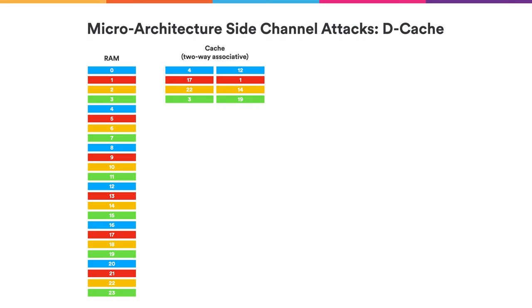To understand Spectre attacks a little bit better, let's have a look at RAM and cache organization of our computer systems. From the cache perspective, we can think of RAM as organized in distinct blocks where each block has a specific kind of color. The cache is far smaller than the RAM and is organized in a number of cache sets, where there is one cache set for each color. Each cache set in turn contains a limited number of blocks — in the example shown, precisely two blocks — called a two-way set-associative cache. Typical realizations are more like eight-way associative.